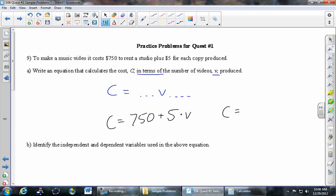If you prefer the mx + b version of things, then we should swap these two terms. So either one of those equations is fine: C = 750 + 5V or C = 5V + 750. Part B: Identify the independent and dependent variables used in the above equation.